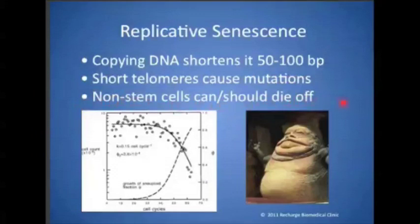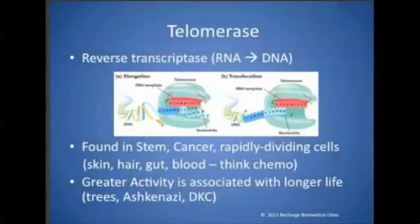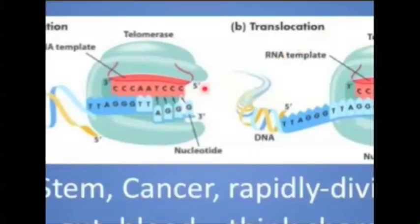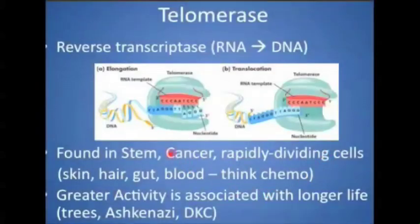Non-stem cells can and should die off — if all cells lived forever, we would all look like that fellow there. The whole key is telomerase, shown schematically as this blue thing, adding new DNA using its RNA template. Telomerase is active in stem cells, cancer cells — which some believe are stem cells gone bad — and rapidly dividing cells such as the skin, hair, intestines, and blood cells. Just think of what dies during chemo, and that tells you which cells are telomerase-active.